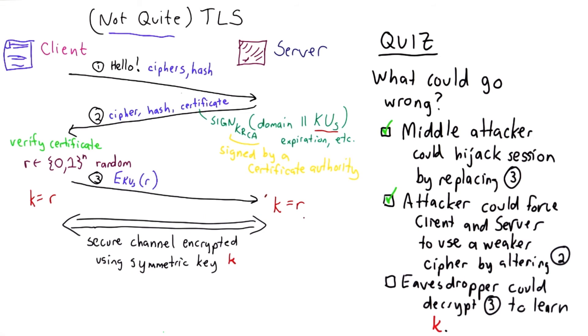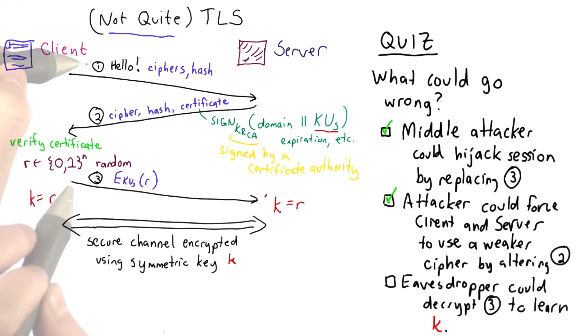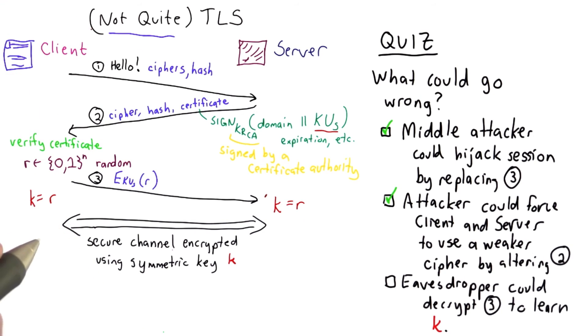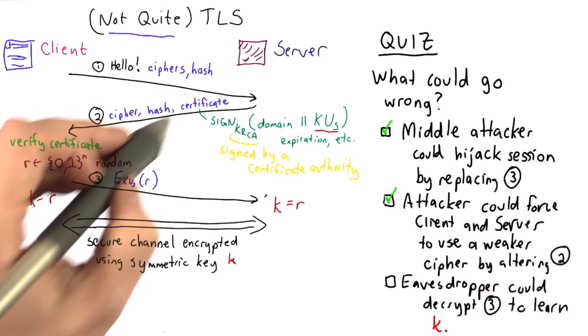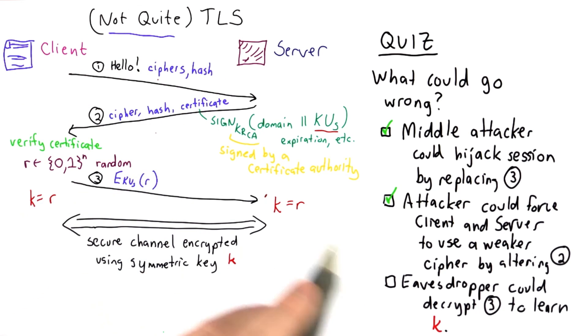We'll look at how to fix both of these problems next. The challenge is we need to fix them at steps in the protocol where there's no shared secret yet. We need to agree on the cipher and the hash function before we actually establish the shared key.